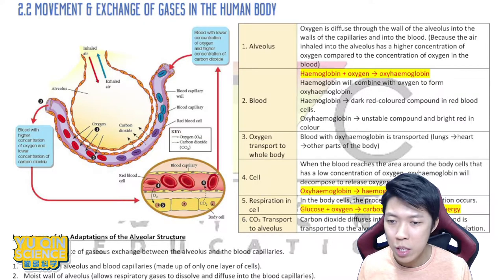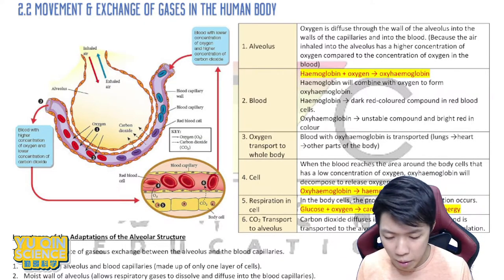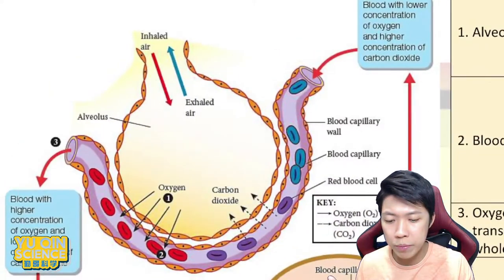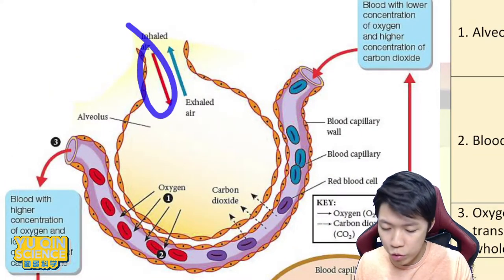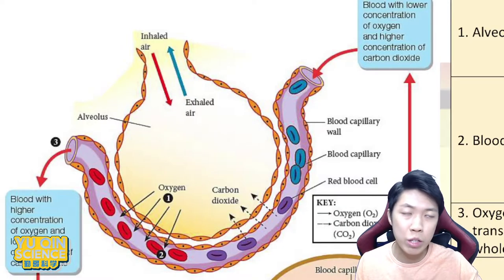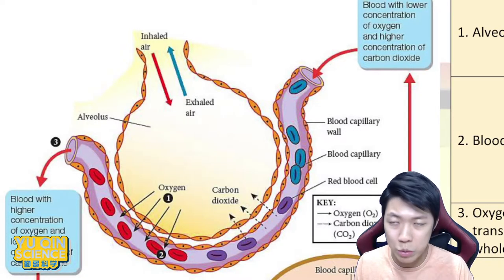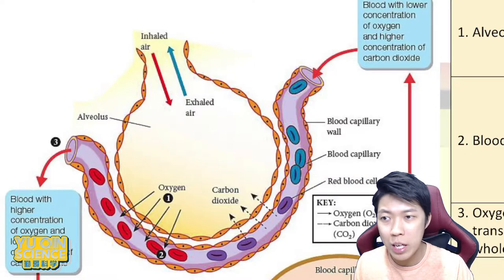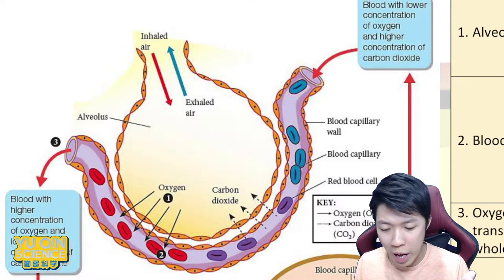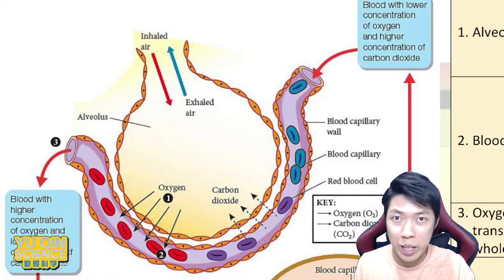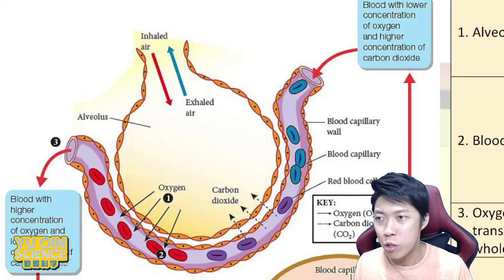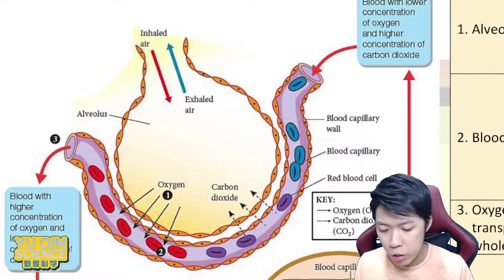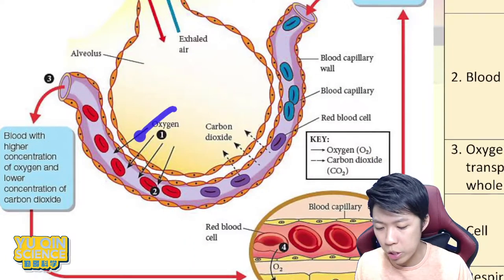First of all, oxygen is inhaled from the air into your lungs. It goes straight into your alveolus, which is the smallest unit or smallest part of your lungs. The alveolus is where we are talking about now. When air enters — mostly oxygen — it will go through a process called diffusion.